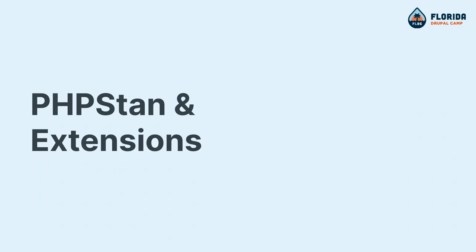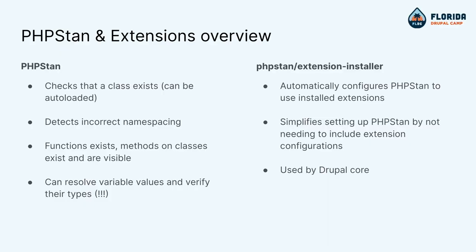So PHPStan checks your code and detects incorrect namespacing — I love this part. In 2016-17, I was working with Bojan building Drupal Commerce 2, using GitHub and Travis CI, and we both used Macs. We pushed tests and they kept crashing in Travis because it said it couldn't find a class. Macs aren't case-sensitive, and our namespace was right but it had a lowercase instead of an uppercase. Two senior engineers spent four hours on Slack wondering why it ran on our machines and not Travis CI. If I had had PHPStan to say the namespace is wrong, it would have caught that.